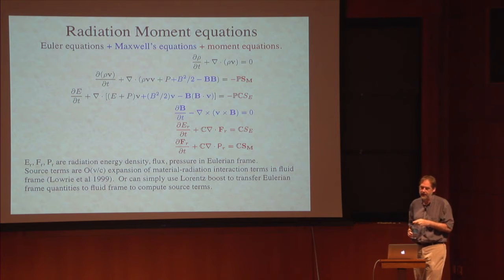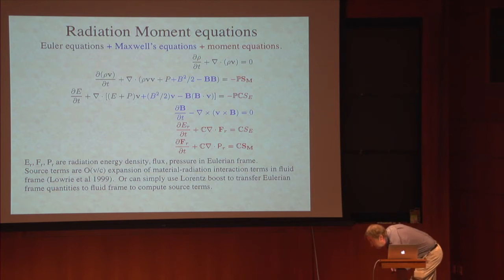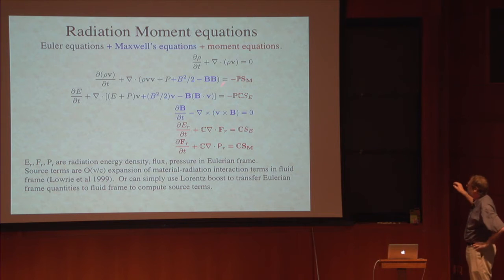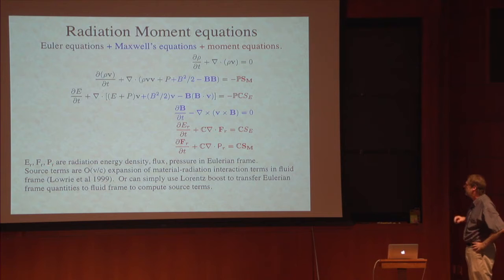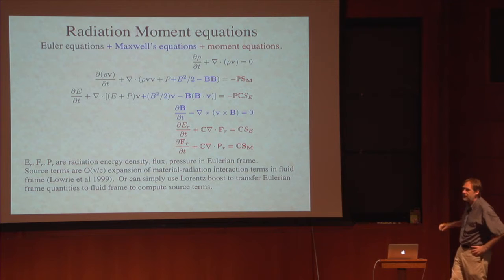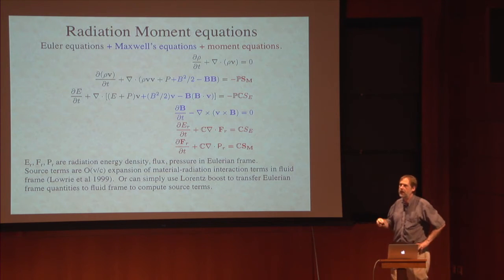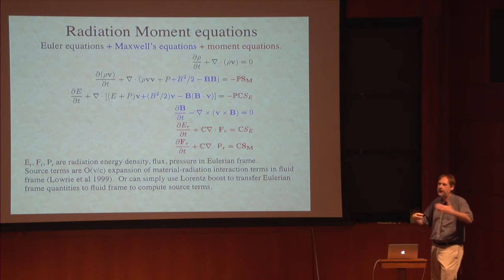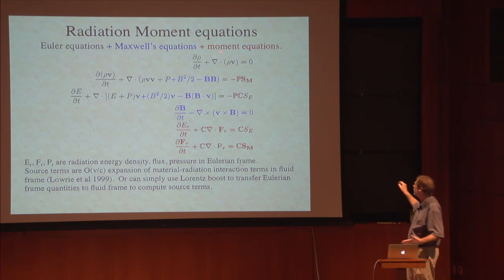Here are the equations written out again — hydro terms in black, MHD terms in blue, radiation terms including source terms in red. This is the system of equations we have to solve: E is radiation energy density, F the flux, P the pressure. These source terms can be calculated in the fluid frame, Eulerian frame, or some mixed frame. Mixed frame has emerged to be the most popular — you calculate the source term in the fluid frame but calculate all other quantities in the lab frame, transforming back and forth.